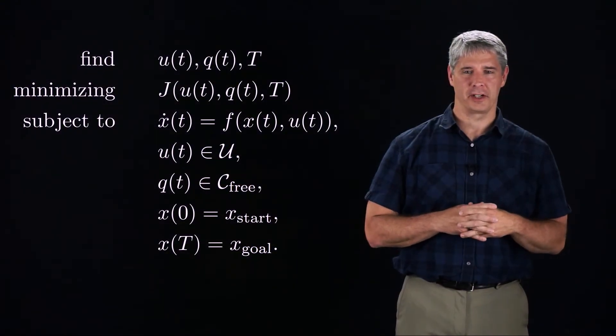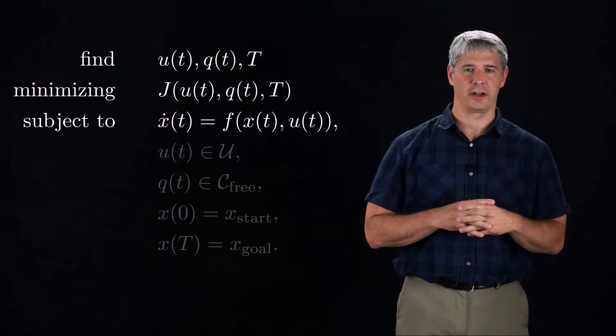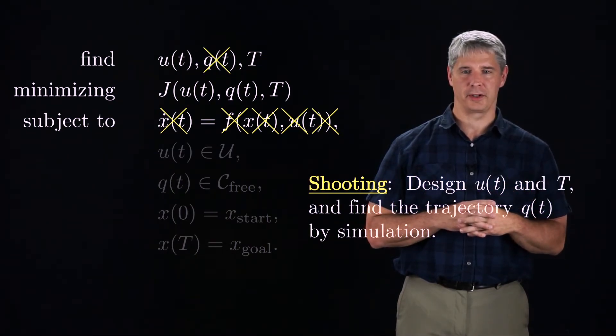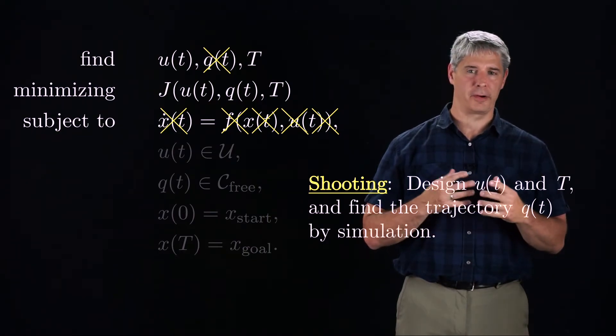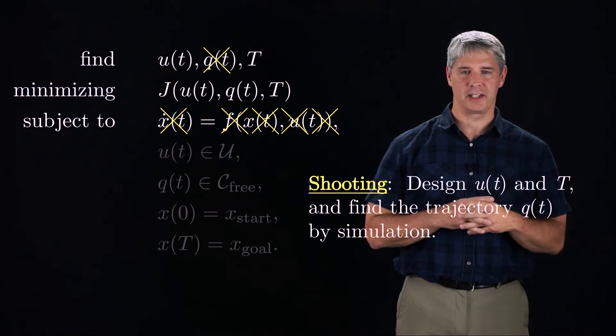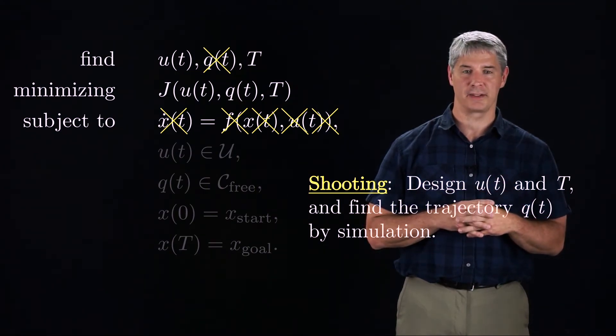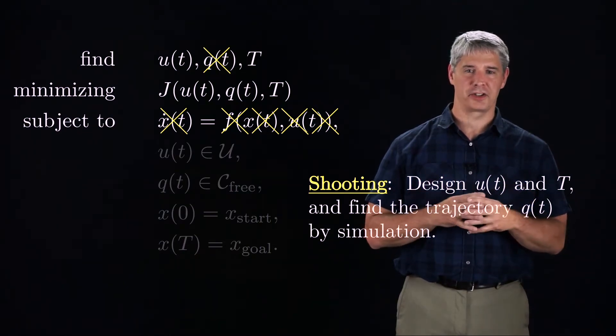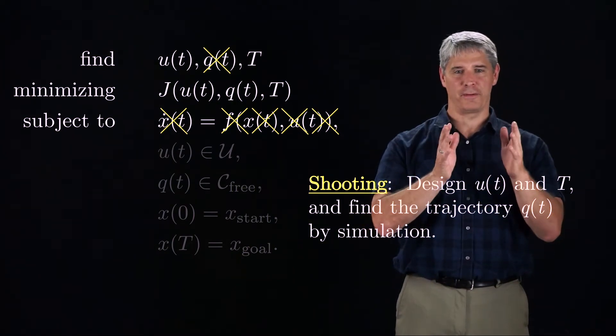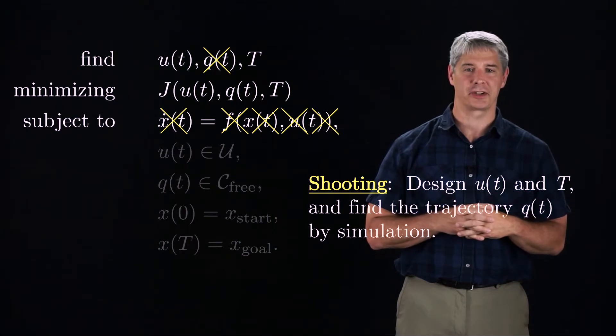Returning to the problem formulation, and focusing on the first three lines, the method I just described is called shooting. With shooting, the design variables are the total time duration, capital T, and the parameters describing the control history. The trajectory is found by simulation of the equations of motion, ensuring that the dynamic constraints are satisfied. This method is called shooting because designing the controls is like aiming a cannon. You see what happens when you fire and update your aim so that the goal is more closely achieved on the next try.